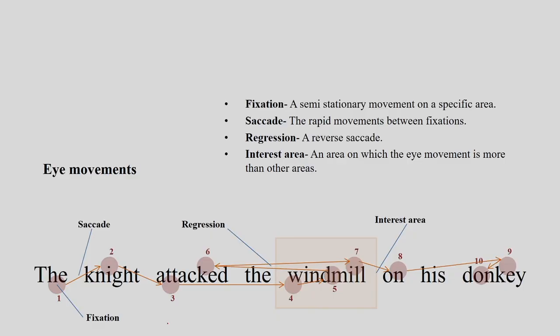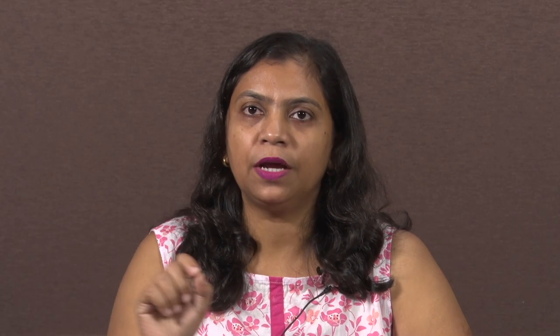In this example — 'the knight attacked the windmill on his donkey' — we are giving a pause at every certain interval when reading the sentence. These semi-stationary movements are called fixations. The second term is saccade — rapid movement from one fixation to another. When my eye moves from the first fixation to the second to the third, that movement is called saccade.